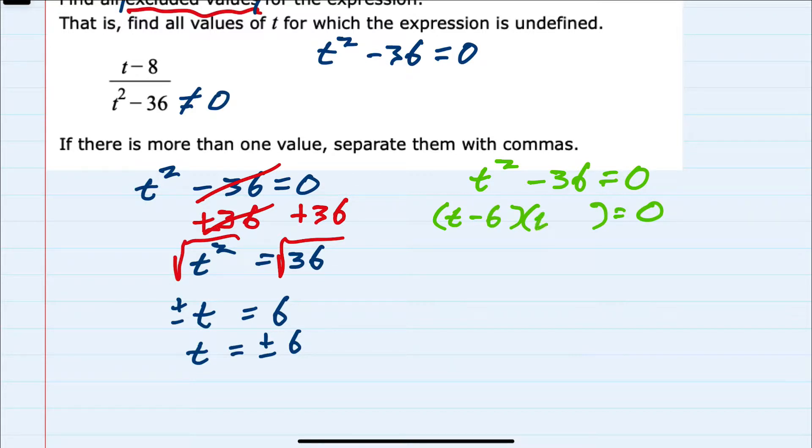And since I have two things being multiplied with the result of 0, that would mean that either t minus 6, the first term is 0, or the second term, t plus 6, would have to be 0.